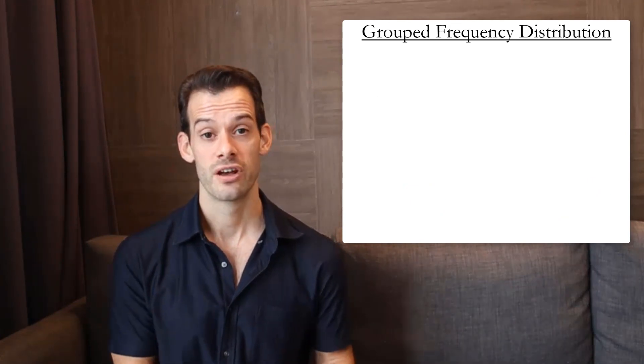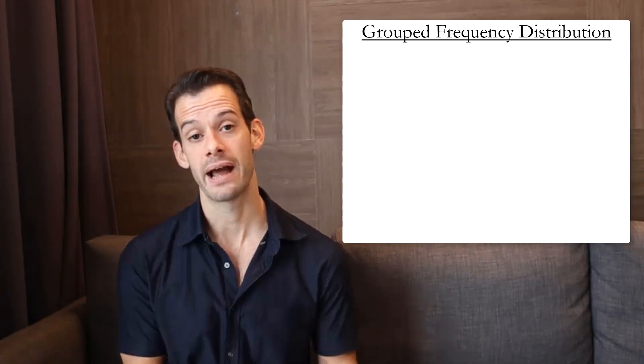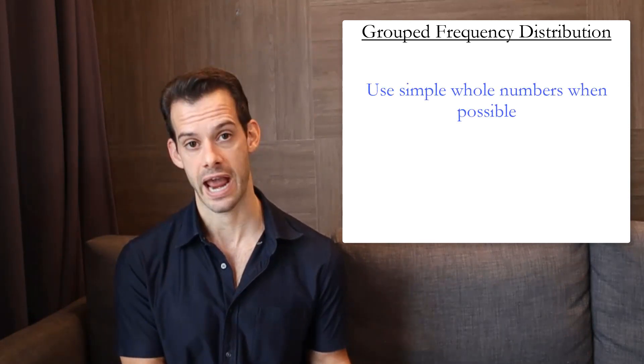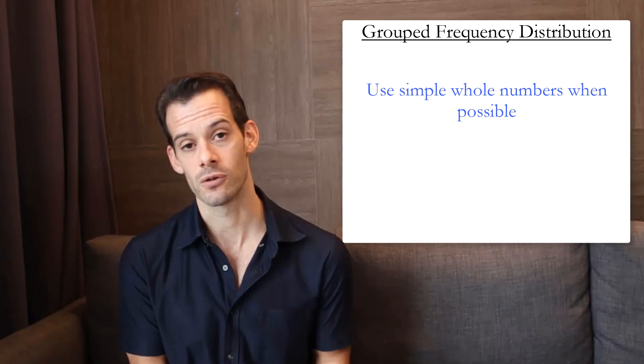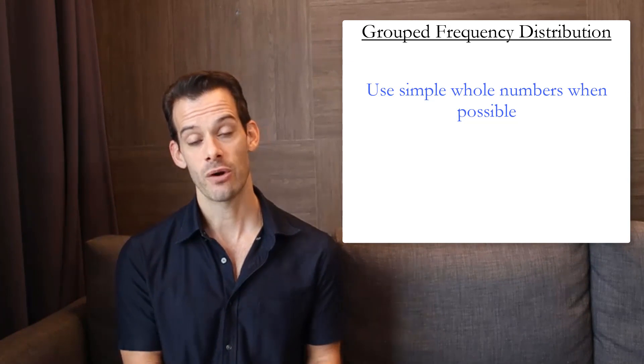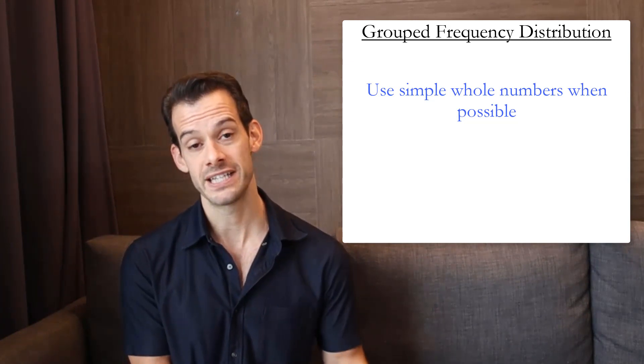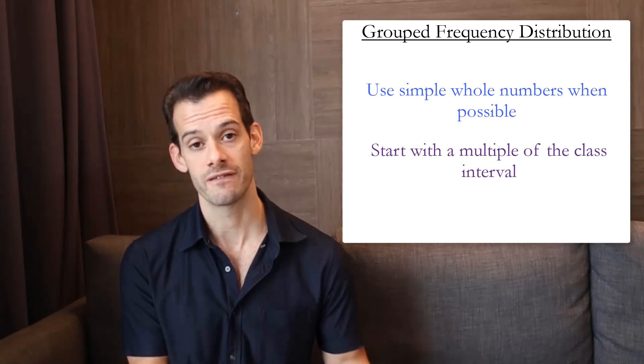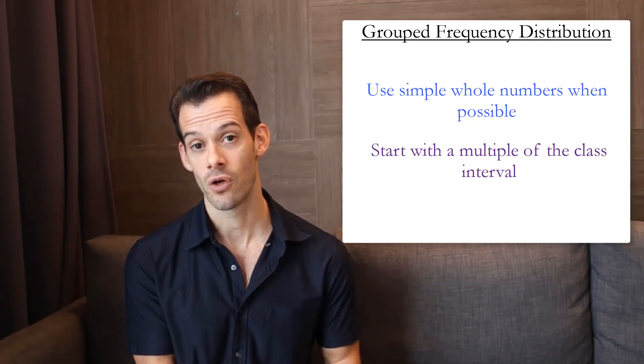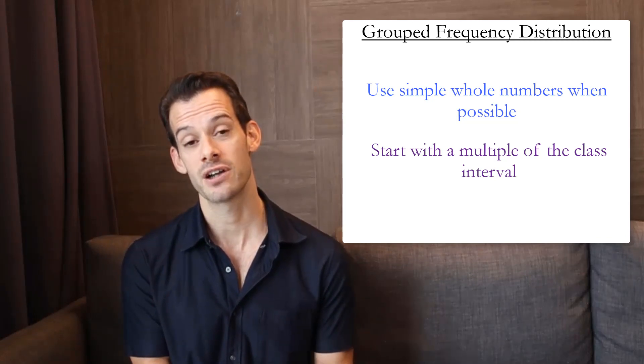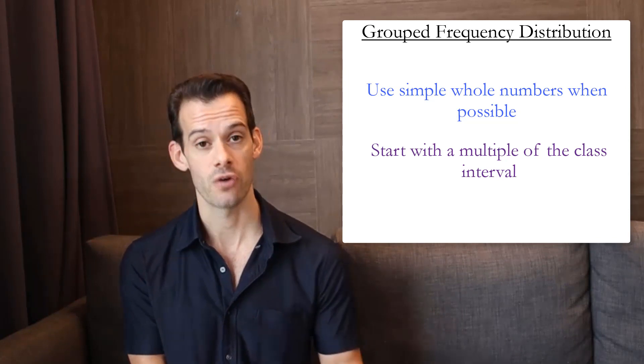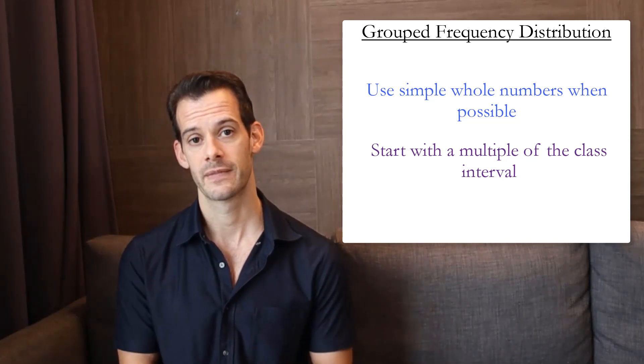In addition to the number of rows there's a few other guidelines that we want to keep in mind when we're choosing our class intervals. The first is to try to choose simple whole numbers whenever you can. So you want to avoid having a class interval like 70.2 to 72.6 or something like this. You also want to make sure that the bottom value of each class interval is a multiple of the class interval. This means that we aren't necessarily going to start our first class interval with the lowest score in our sample. Instead, we're going to start the first class interval with the lowest multiple of the class interval that's closest to our lowest score.